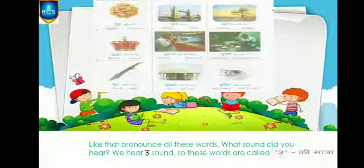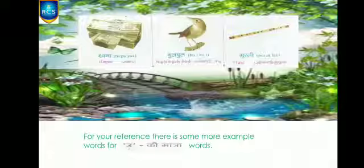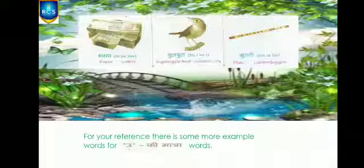Chudiya — for that also you get U sound. Ruppaya — Roo — you get U sound. Bul — for that you get U sound for boo. Murali — Murali means flute. For that also you get U sound.